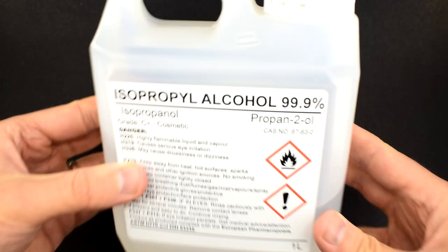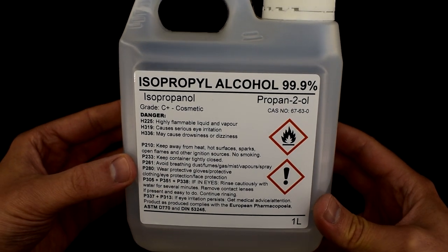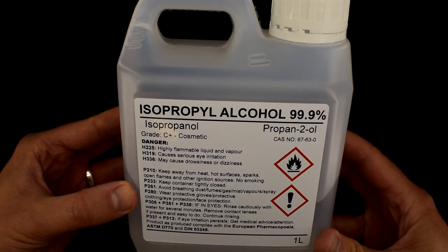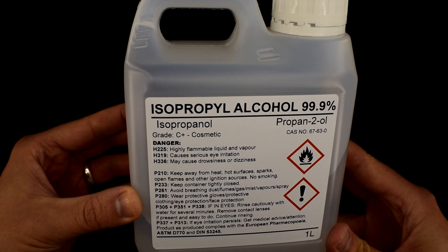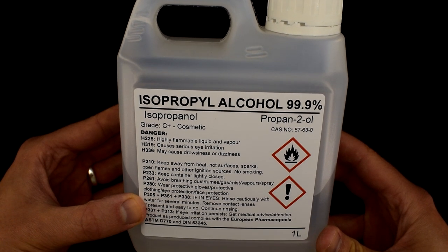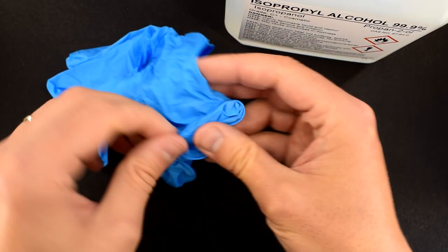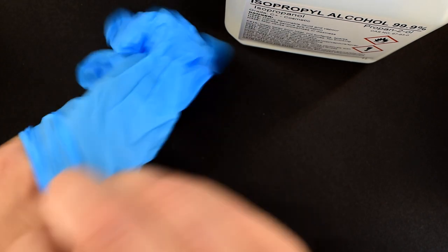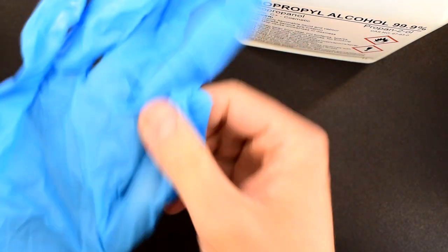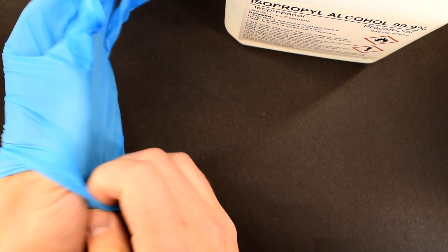I'm going to be using Isopropyl Alcohol, or sometimes known as IPA, and no, not the kind you drink. This is 99.9% strength, so I don't need to tell you that this is going to be pretty nasty stuff. Use this in a well-ventilated area, keep it away from ignition sources, and make sure you wear gloves. I got this one litre bottle for about eight pounds and it will last me a while.